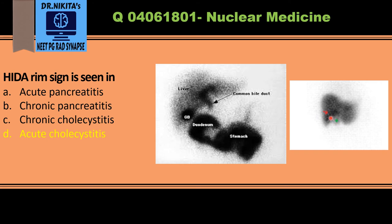The HIDA rim sign indicates a high chance of complications such as perforation or gangrenous cholecystitis, and it warrants urgent surgical intervention. In summary, the HIDA rim sign in acute cholecystitis signifies inflammation in the surrounding liver parenchyma.